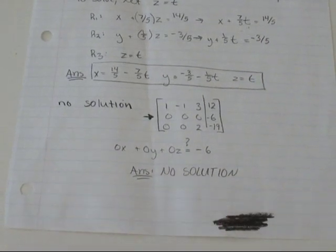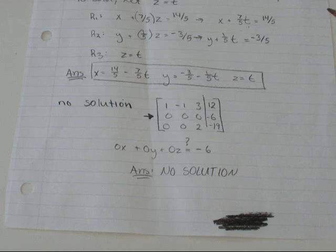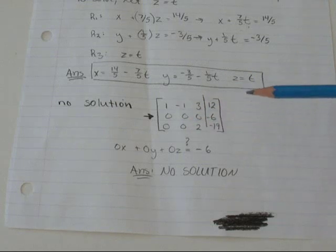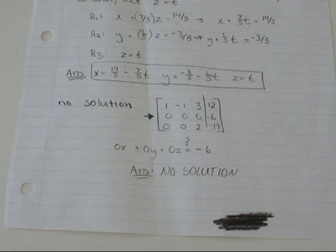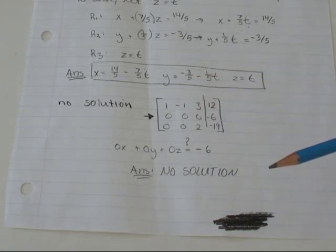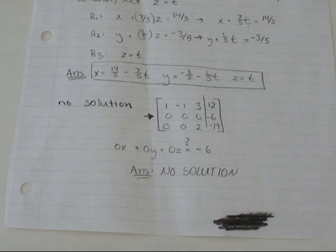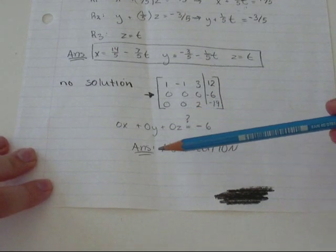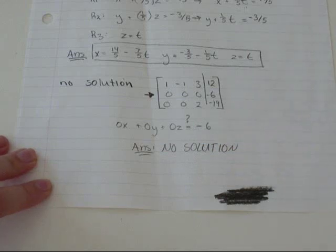So another case you could get is no solution. And no solution is when you have a situation where, let's say, 0x plus 0y plus 0z equals negative 6. Well, 0 times anything is always 0. So there's no way you're going to get 0 times something plus 0 times something plus 0 times something equals negative 6. It will never happen. So for your answer, you just write, no solution.